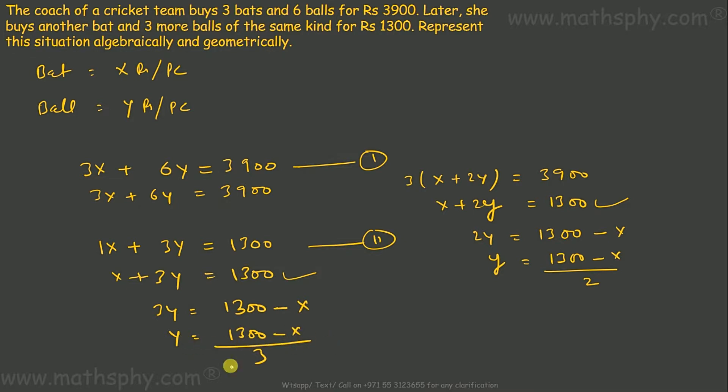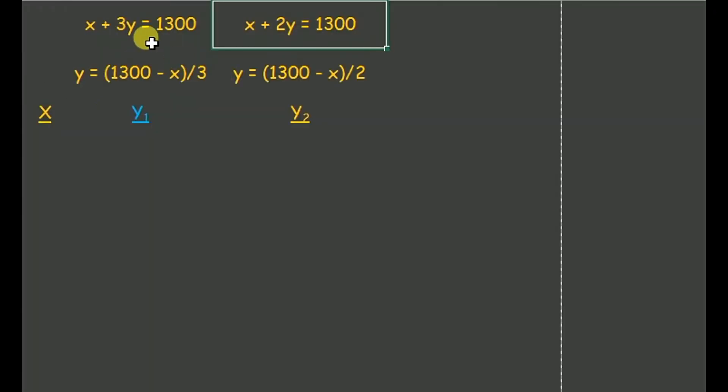So now I can represent both these equations into the graph. This equation, x plus 3y equals 1300, gave me y equals 1300 minus x over 3. This equation, x plus 2y equals 1300, gave me y equals 1300 minus x over 2. So now let's put both these equations into the graph.